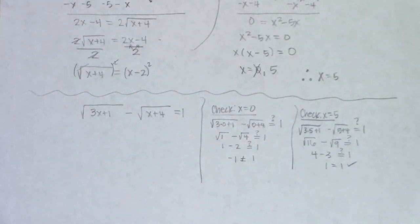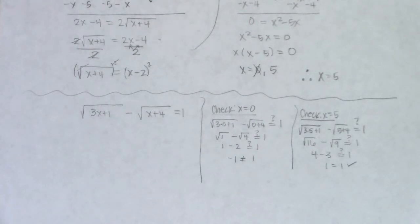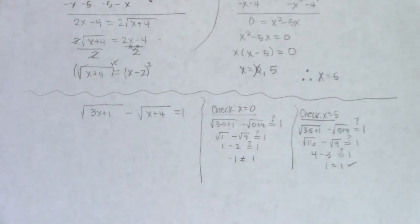It's a lot of work to do, but we do get our one answer: x equals 5. So that's how we solve radical equations. When we get to the next page, we're going to take our first look at absolute value equations.